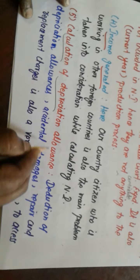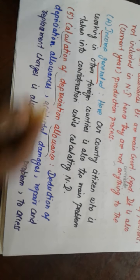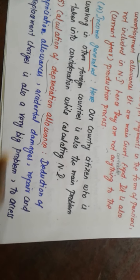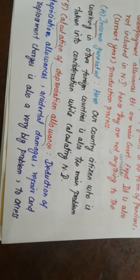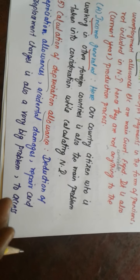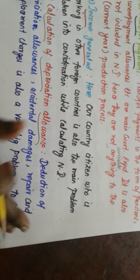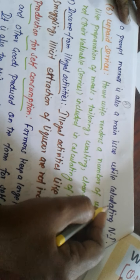Next is the calculation of depreciation allowance. Deduction of depreciation allowance — such as accidental damages, repair and replacement charges — how much amount it will be, needs to be calculated in a very minute and proper way. So it is a very big problem to assess in a very minute or prompt manner, and this is a main important issue while calculating national income.